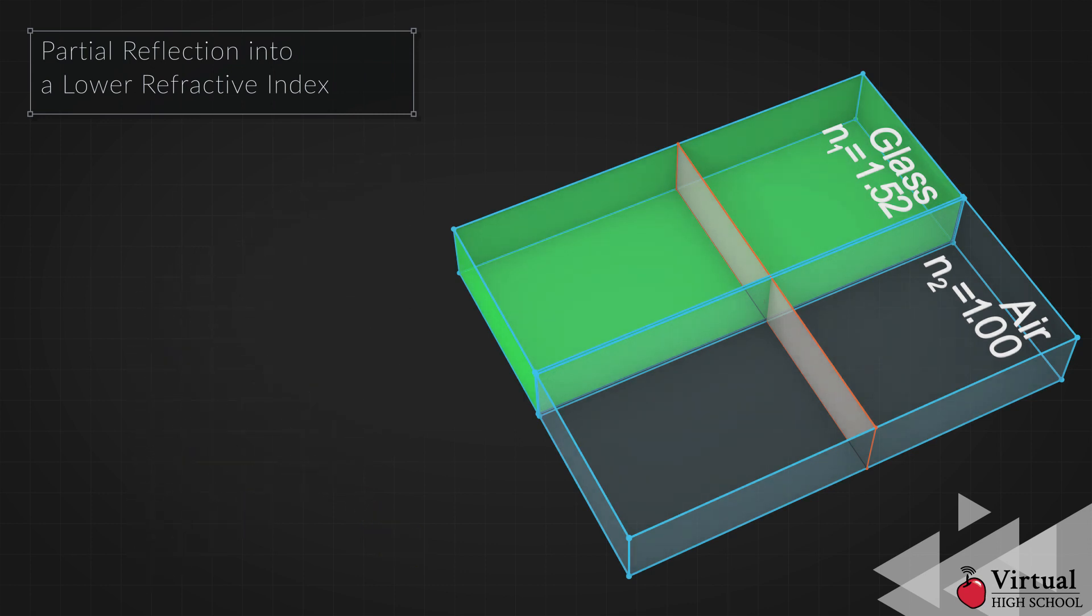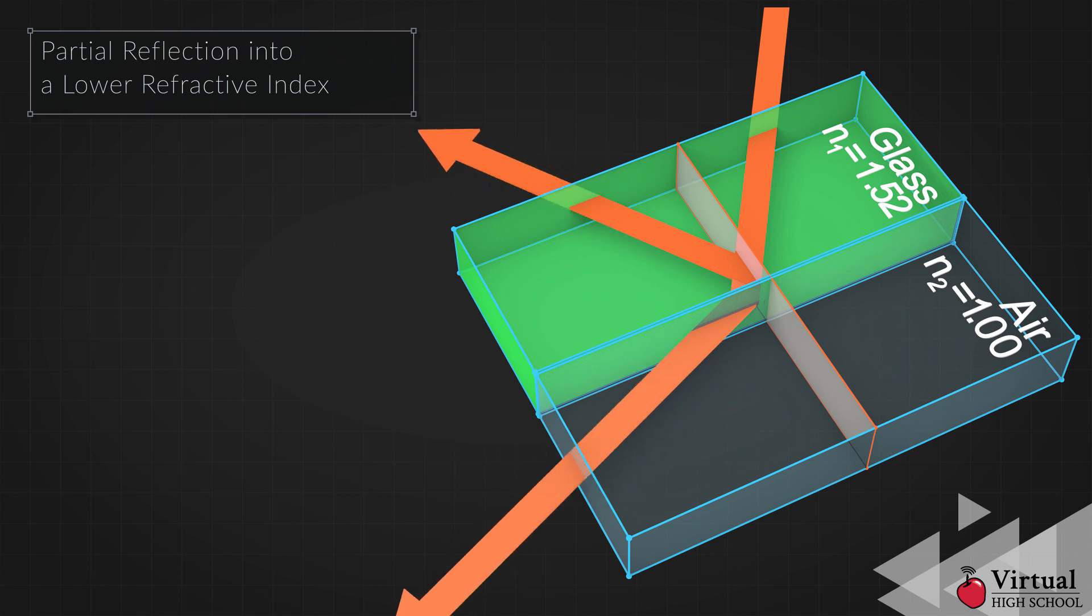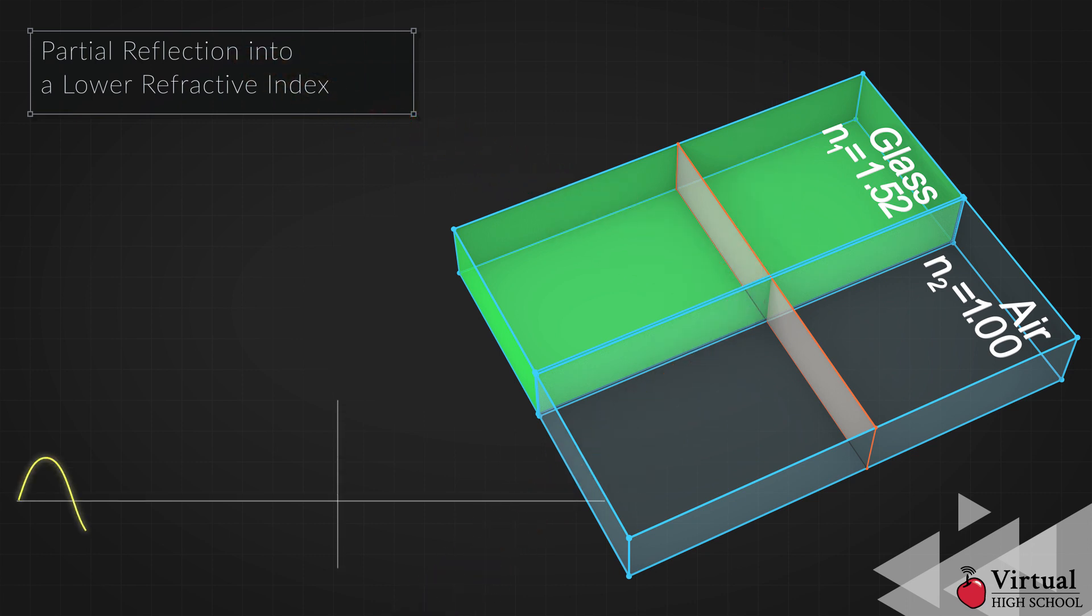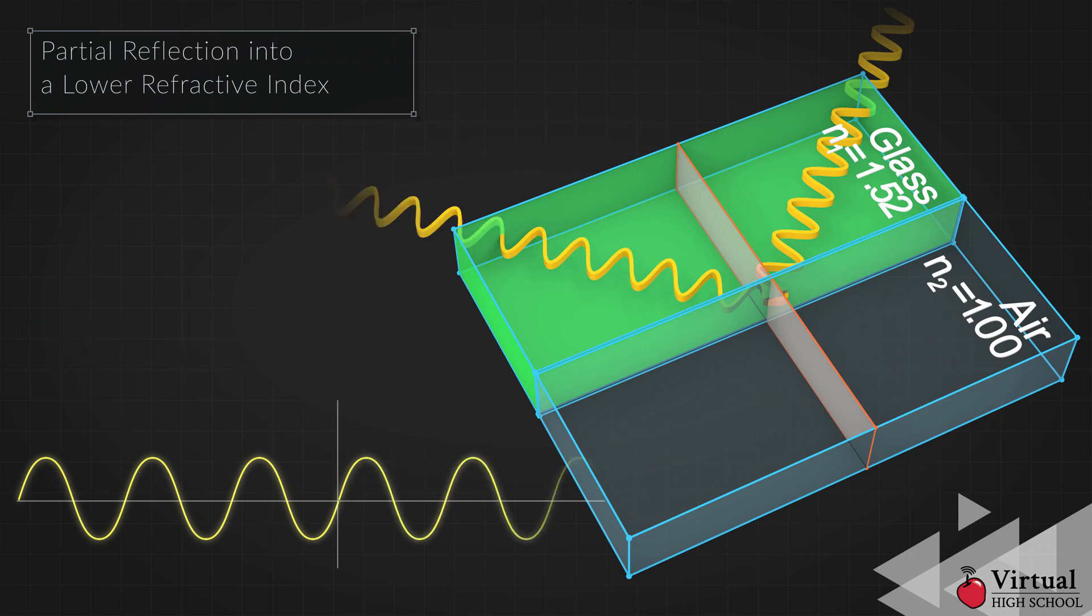When the wave hits the interface between the glass and air, some of the light is reflected. In this case, the light does not undergo a phase change. Notice how the wave is not flipped.